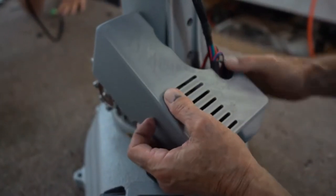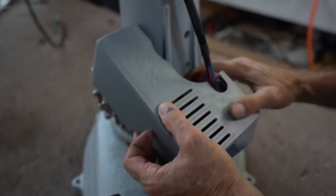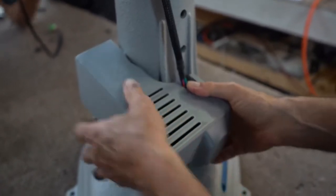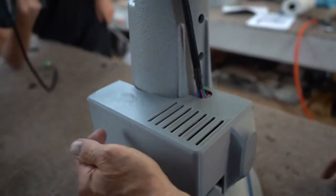When putting on the Z-gearbox cover, make sure that all the wires are pushed inside. Slide it on from the rear and then push down.